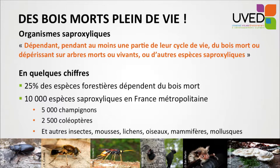Saproxilic organisms refer to all species which depend, for at least one part of their life cycle, on dead wood, or which depend on other species that are themselves saproxilic. Saproxilic organisms in the forest represent 25% of forest species, meaning that one forest species in four depends on dead wood for all or part of its life cycle.